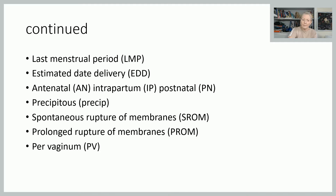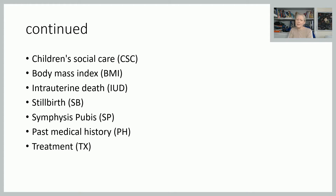Per vaginam is abbreviated PV. Children's social care — written as CSC — is a much bigger umbrella than just child protection; children in need also come under it. Body mass index is calculated in the antenatal period and throughout pregnancy to help risk assess. Intrauterine death is IUD, but importantly this is one of those abbreviations that can mean something completely different — in contraception, an IUD is an intrauterine device or coil — so you need to be mindful of the context.